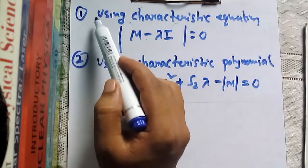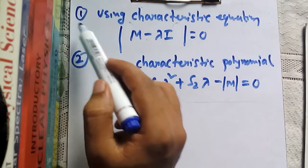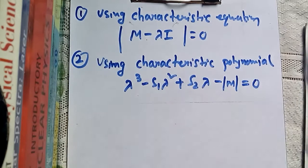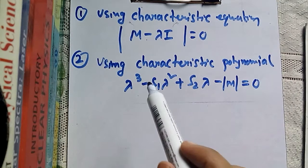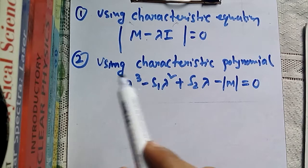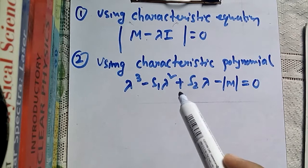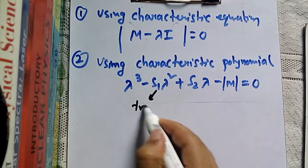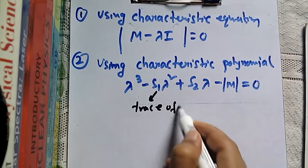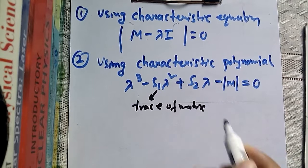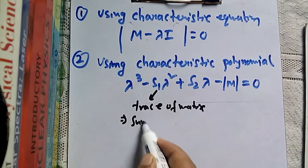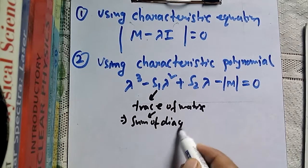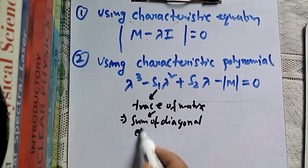Most people use this method. We have seen a previous video using the characteristic equation, but for this video we will use the characteristic polynomial. Here, S1 is called the trace of the matrix. The trace of the matrix is simply the sum of the diagonal elements.